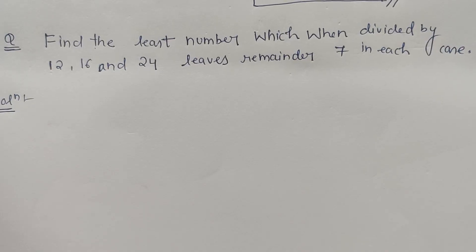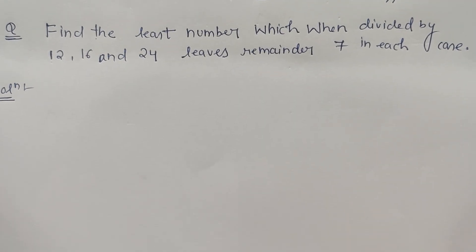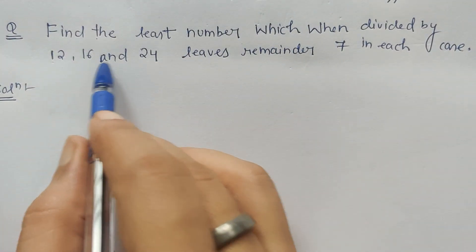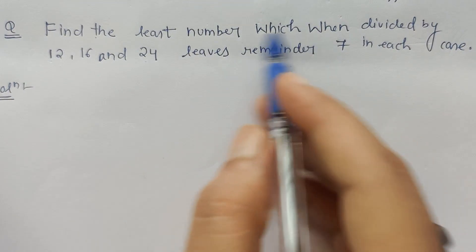We find the least number which when divided by 12, 16, and 24 leaves remainder 7 in each case. Whenever we have to find the least number which when divided by these numbers leaves the remainder, in that case...